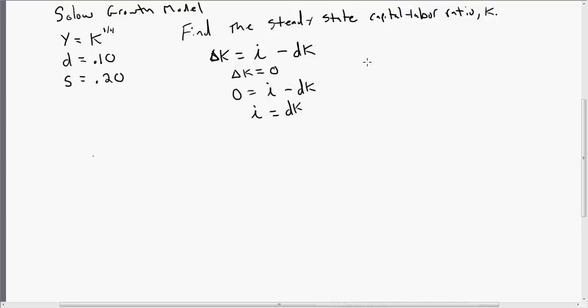One of the key things, and I showed this in my first video, is that investment per worker is going to equal national saving times GDP per worker. So since I know that investment per worker equals S times Y, I'm just going to substitute that into this equation over here.